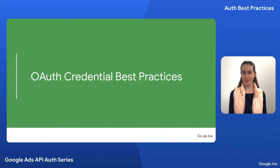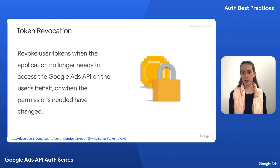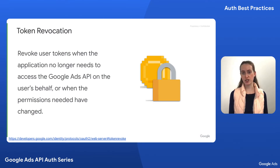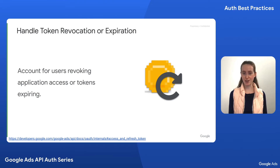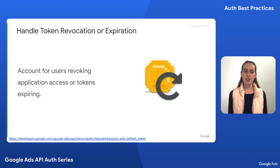Now let's discuss OAuth credential best practices. When an application no longer needs to act on behalf of a given user, it should revoke the access it was given, to ensure it doesn't access user data it isn't meant to. An application should also revoke credentials when permissions have changed and generate new tokens granting the correct level of permission. Since refresh tokens do not last forever, your application should trigger a reauthorization workflow for users upon losing access due to token revocation. Developers should be prepared to handle this scenario.